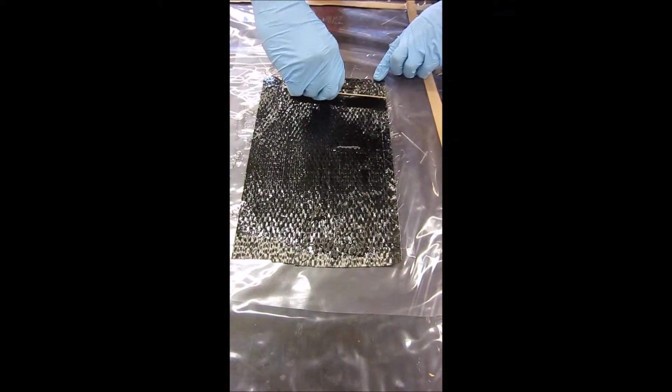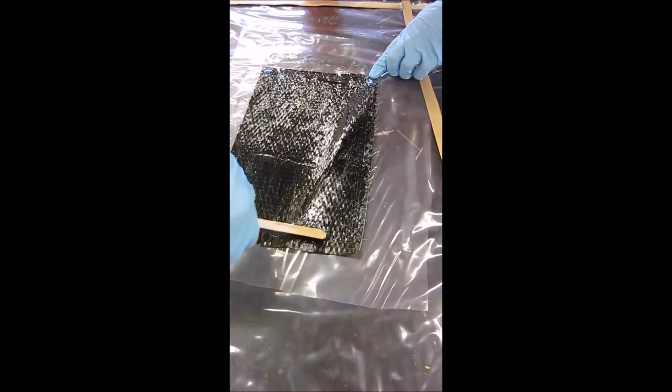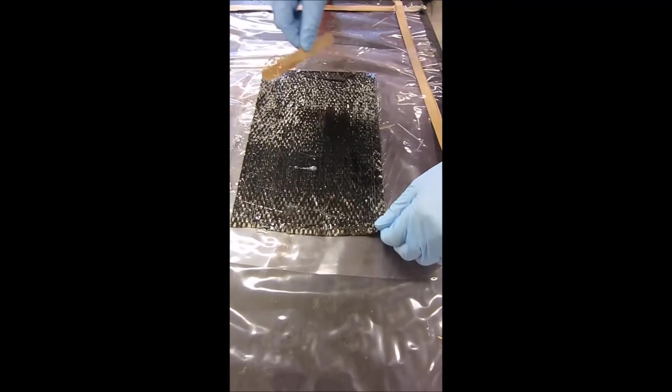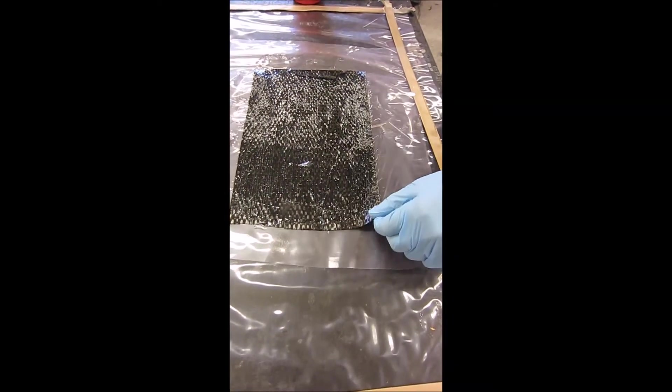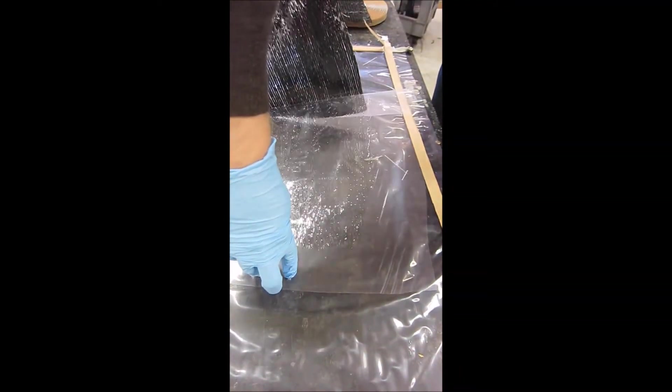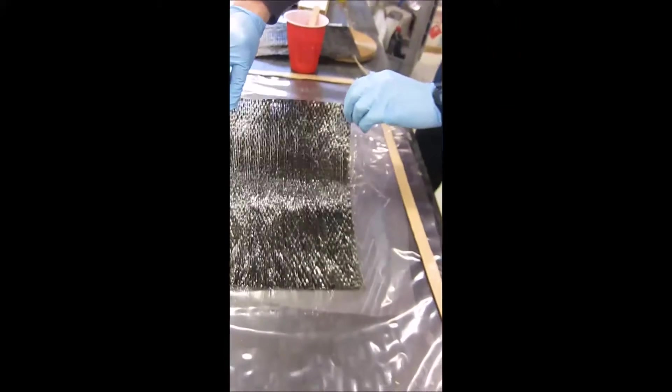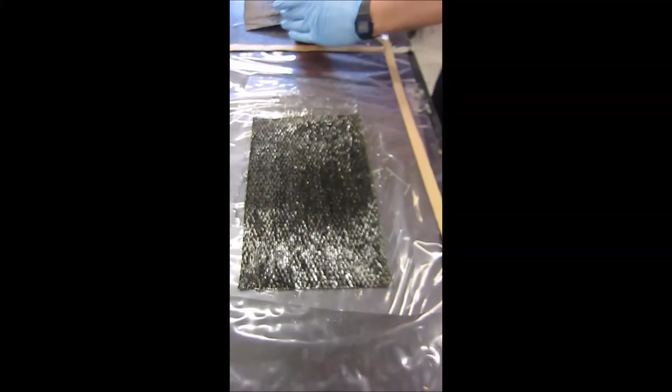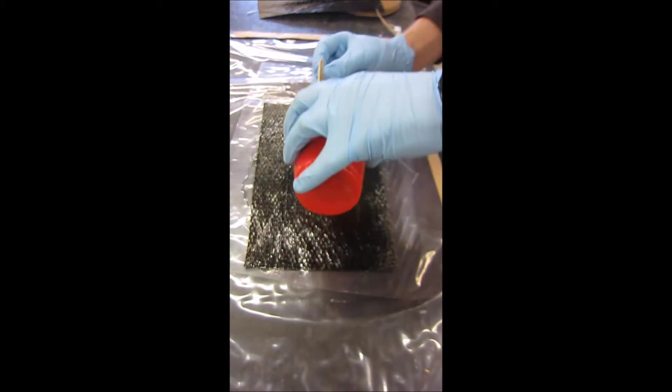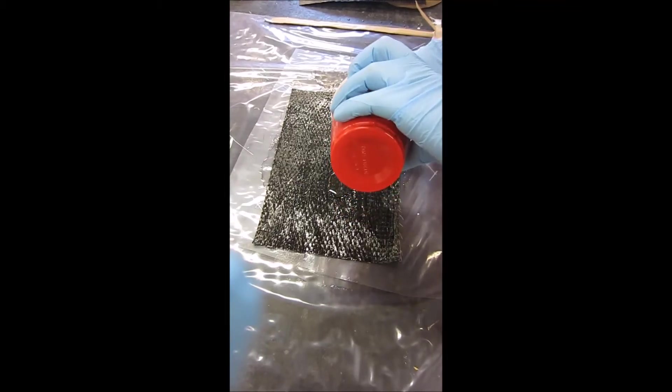Once you do it on one side, the easiest way to make sure that you have spread the epoxy really well is to just pick up the part and flip it over to be sure and get the backside. You'll probably notice when I flip it over, the underside is not well coated either. So this is why you have to pay careful attention, spend a lot of time making sure that your epoxy is filling in all the voids of your work part.